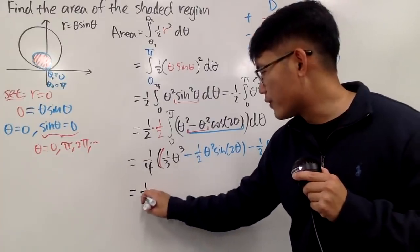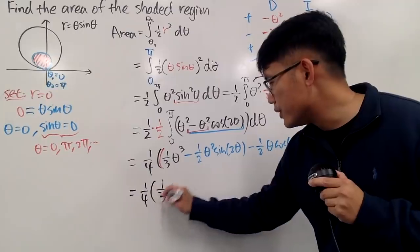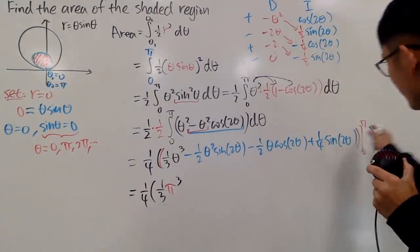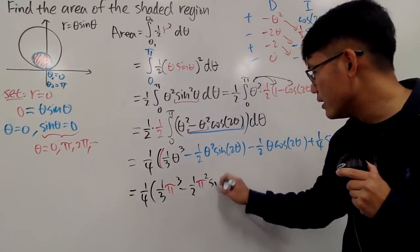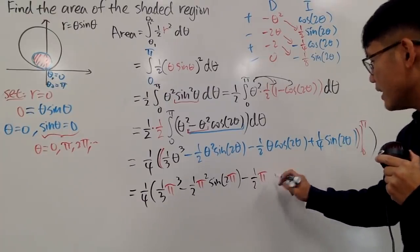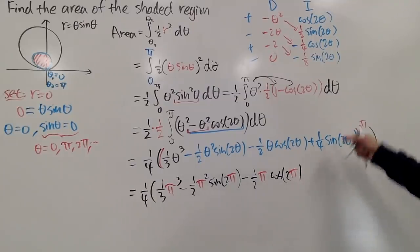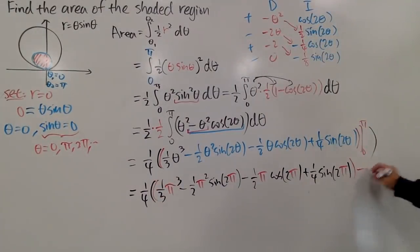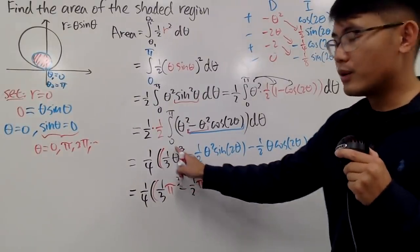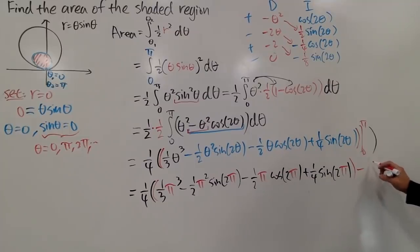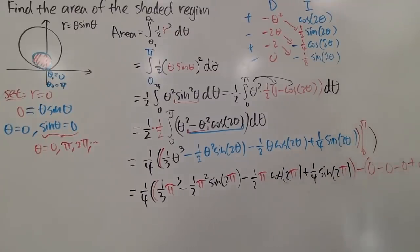Setting up the evaluation: with the 1/4 factor in front, plugging in pi gives (1/3)pi³, minus (1/2)pi² times sin 2pi, minus (1/2)pi times cosine 2pi, plus (1/4)sin 2pi. Since sin 2pi equals 0 and cosine 2pi equals 1, most terms vanish. Plugging in 0 gives everything zero. So we're left with 1/4 times (1/3 pi³ minus 1/2 pi).